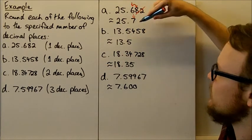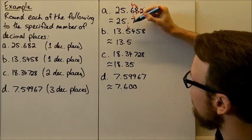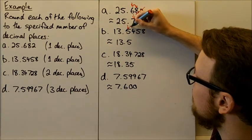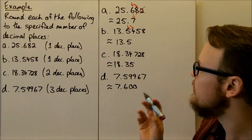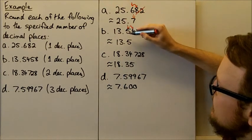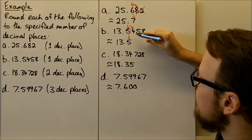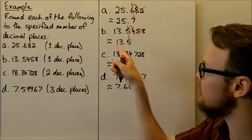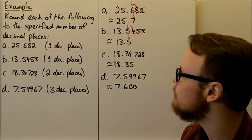Our next number we round to one decimal place as well. Put an arrow at the first decimal place and look to the number to the right of it — it's 4 or less, so we leave the number as is. We leave that 5 and the decimal point as is, and don't worry about all of the other digits. So it's approximately equal to 13.5.